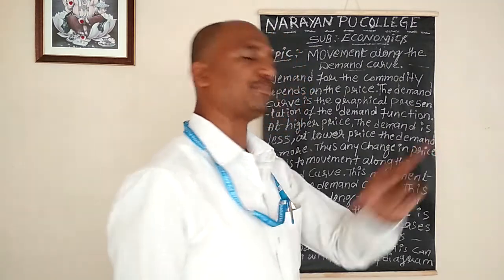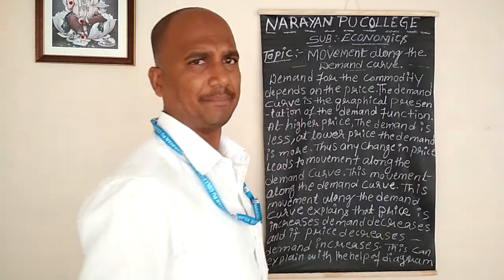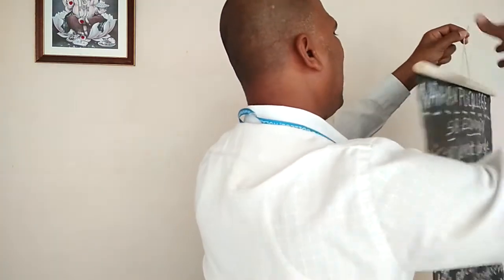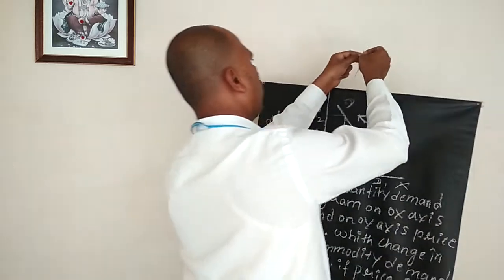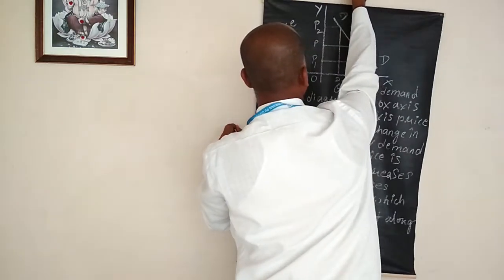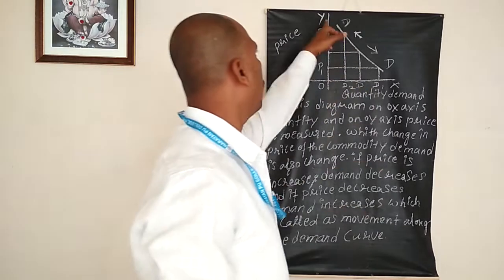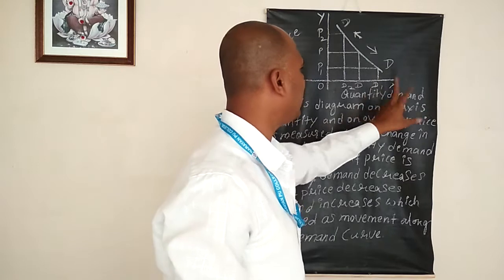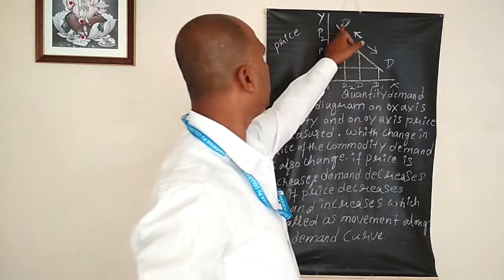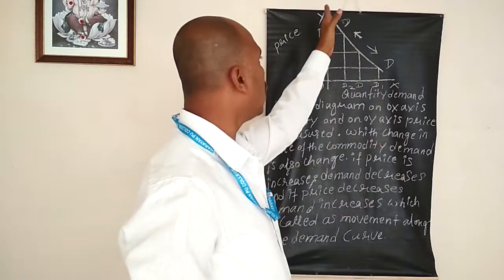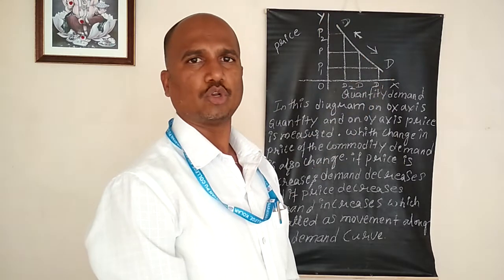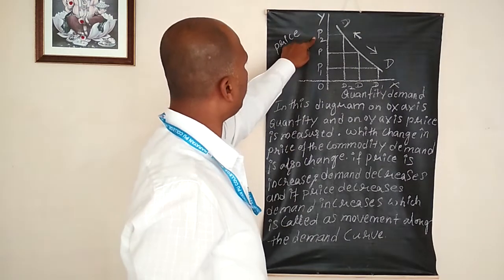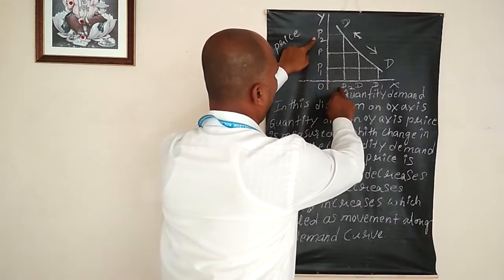This can be explained with the help of a simple diagram. The demand curve slopes downward from left to right. On the OY-axis, I measure the price; on the OX-axis, I measure the quantity demanded. DD is the demand curve, sloping downward from left to right. When price is P2, the demand is D2 — meaning price is more, demand is less.